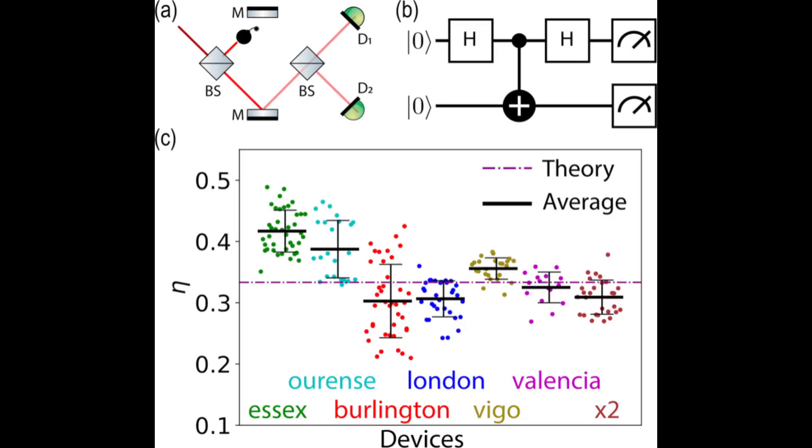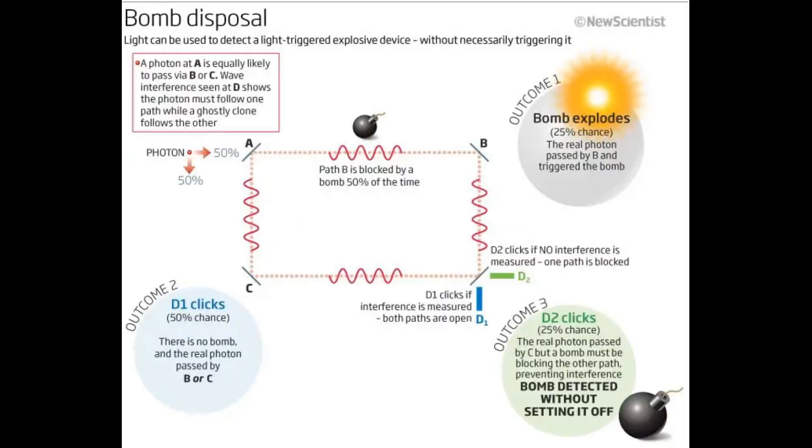The Elitzur-Vaidman bomb test problem is a quantum thought experiment that uses the principles of superposition and quantum measurement to determine the state of a system without directly interacting with it. In the scenario, a photon encountering a half-silvered mirror can either pass through or be reflected, and can exist in a superposition of both possibilities. By creating an interference pattern, the existence of a sensitive trigger can be inferred without exploding, demonstrating the power of counterfactual phenomena in quantum mechanics.